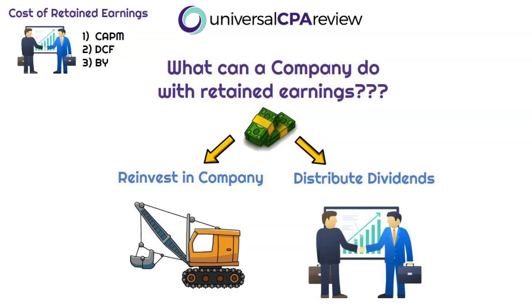Let's move on to the cost of retained earnings, which is related to the cost of equity. When a company has retained earnings, they can either keep that cash to invest it in growing the business or give it out in the form of a dividend. So they need to determine their cost of retained earnings on that equity. There are three models used: the Capital Asset Pricing Model, the Discounted Cash Flow, and the Bond Yield Risk Premium model.